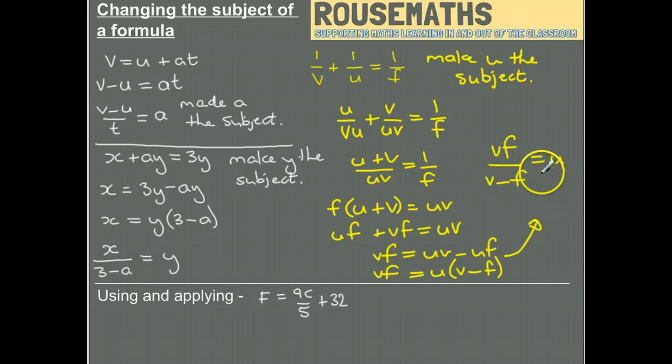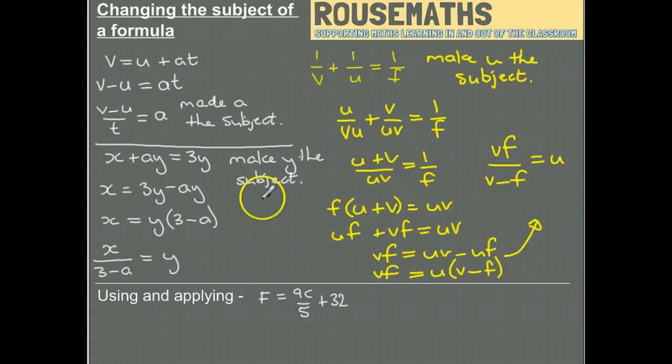So that's rearranging formulas. I've taken three sort of more challenging examples. This is your A-level style work. Just want to show you a practical example of it. Here's the formula for converting degrees Celsius into degrees Fahrenheit, but it may be that you want to go the opposite way, so we're just going to try and rearrange this one.